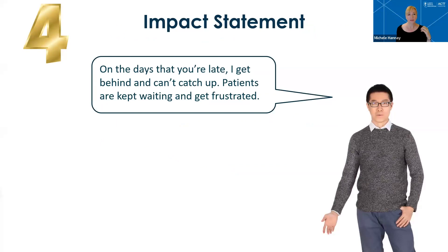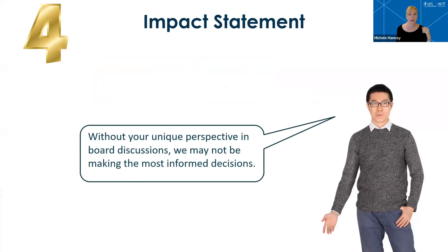Step four is about spelling out the natural consequences of the behavior — the impact it has or has had from your perspective. This really helps to connect the logic. So our feedback giver says: "On the days that you're late, I get behind and can't catch up, and patients are kept waiting and get frustrated." In the board example, the feedback giver says: "Without your unique perspective in board discussions, we may not be making the most informed decisions."